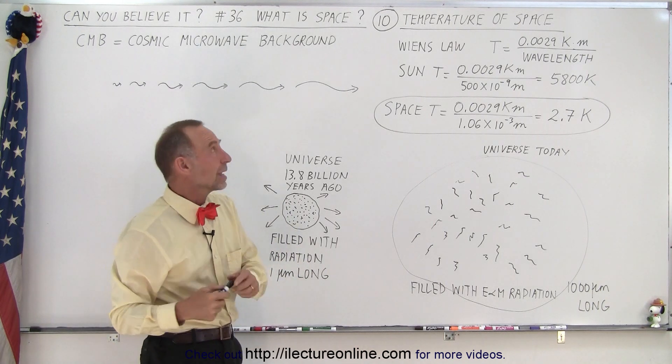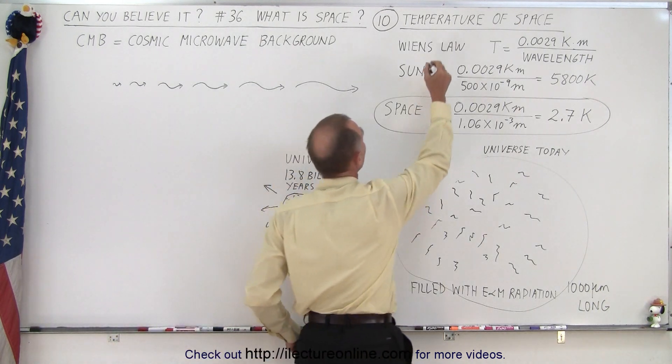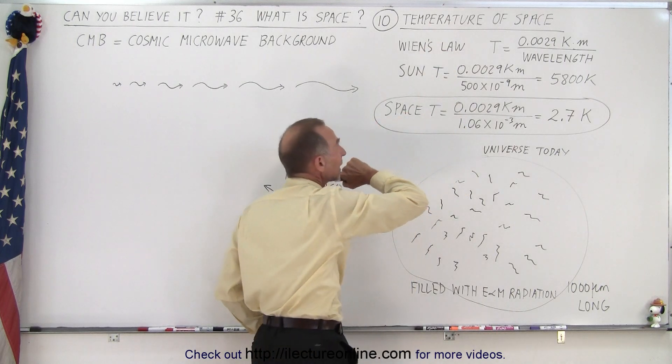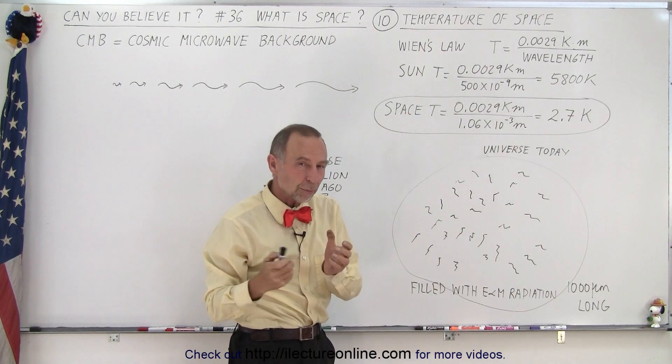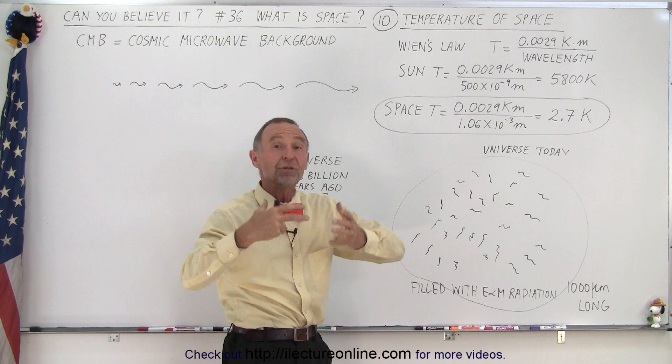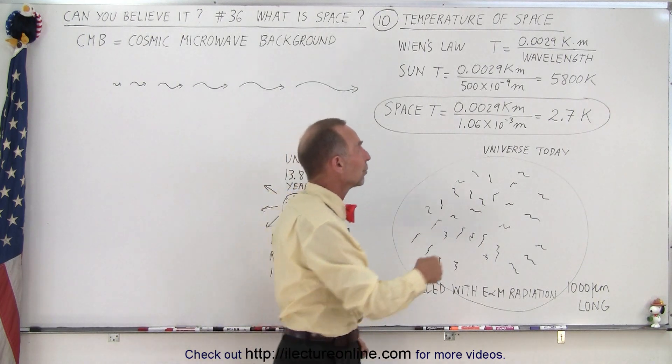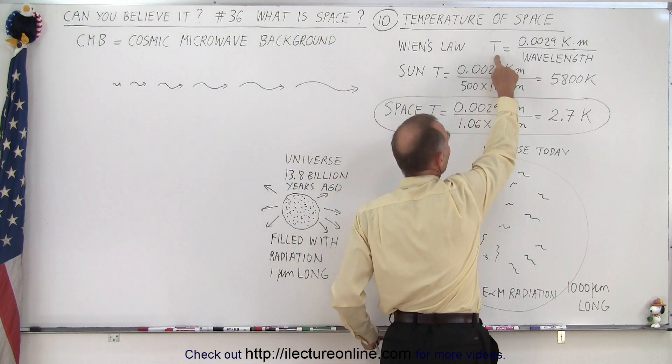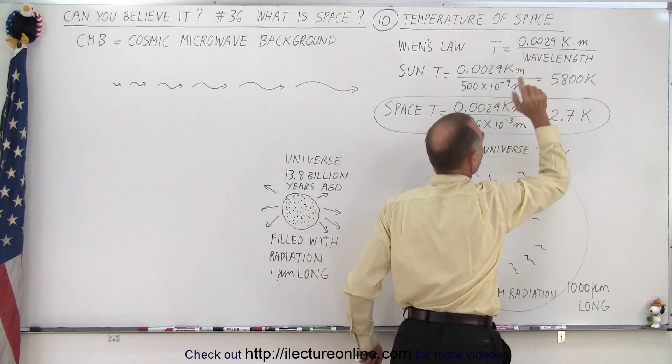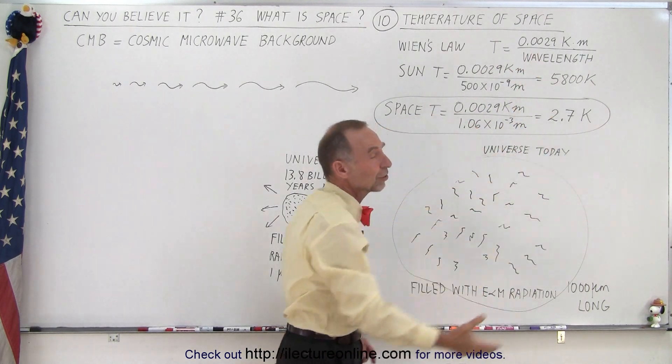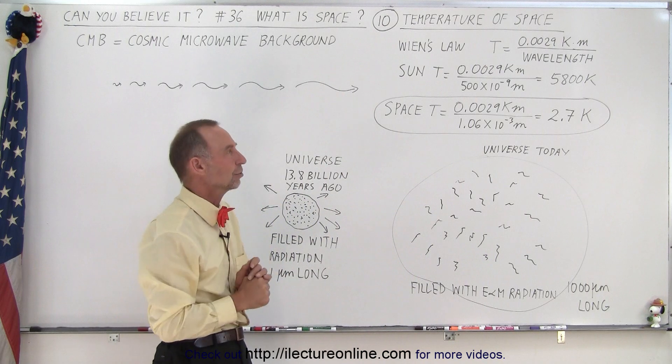Wien came up with the idea, Wien's Law, that there was a relationship between the radiation we receive from an object and the temperature of that object. And the relationship came where the temperature was equal to 0.0029 Kelvin times meters divided by the wavelength of that radiation.